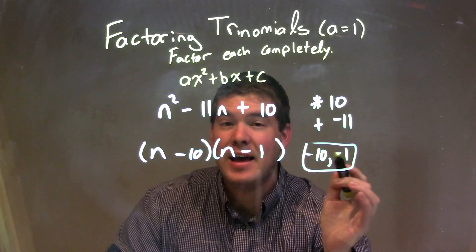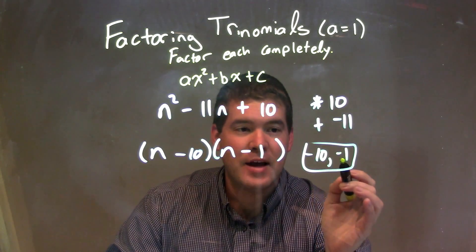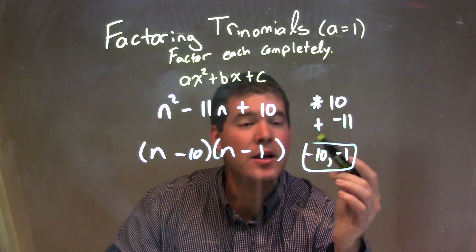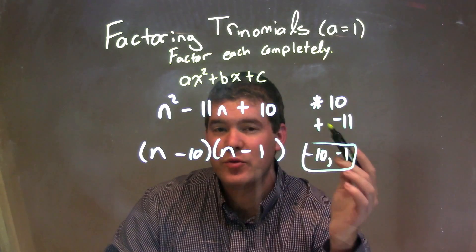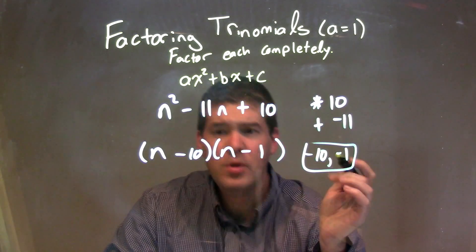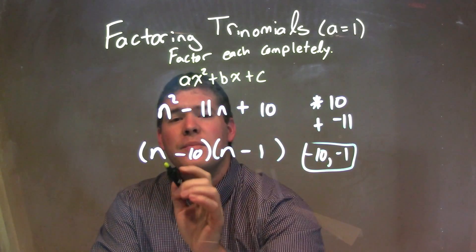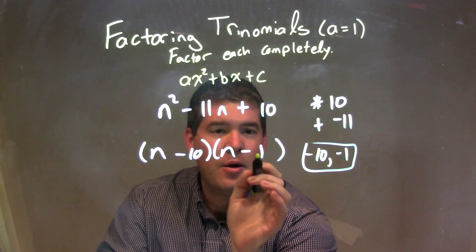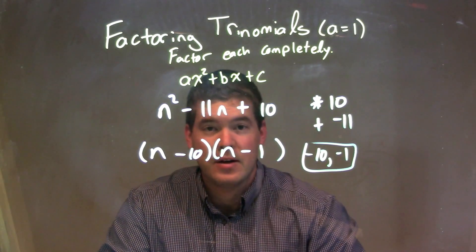Those two numbers are negative 10 and negative 1. They multiply together, negative 10 times negative 1 is a positive 10. But when I add them, I get a negative 11. So when we write this and factor it out here, we have n minus 10 times n minus 1. And that is our final answer.